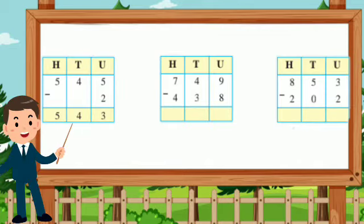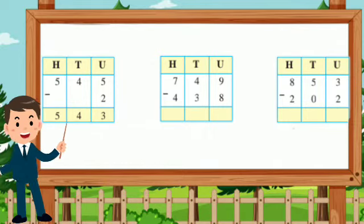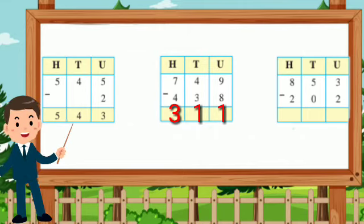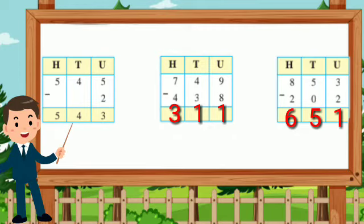Subtract: 545 minus 2 is equal to 543. Next, 749 minus 438 is equal to 311. Next, 853 minus 202 is equal to 651. 237 minus 114 is equal to 123.